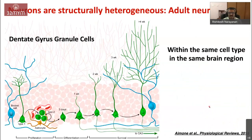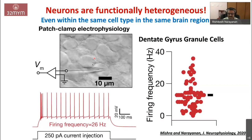If you look at the functional properties of these cells through patch clamp electrophysiology experiments done by Poonam — these are dentate gyrus granule cells — injecting 250 picoamperes of current into a cell elicits a firing pattern of around 26 hertz. But across different cells she recorded, there is significant heterogeneity in how many action potentials these cell types can fire in response to the same stimulus. Some cells don't even elicit firing, while others fire at very high rates. So there are different kinds of heterogeneities in neural circuits.